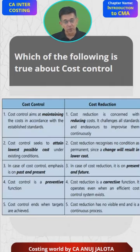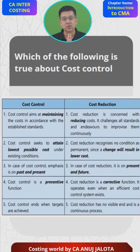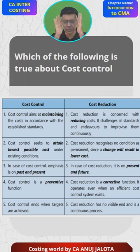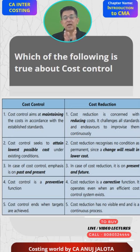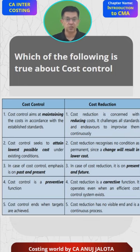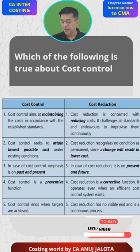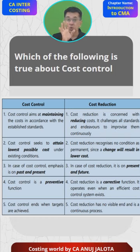Now, one thing you should know about cost control and cost reduction: cost control is maintaining the cost as per the standards. Cost reduction means — we have this calculator made by a company called Casio, following standard costing, cost is as per standards, but they would still like to reduce the cost further — that is cost reduction. Cost control seeks to attain the lowest possible cost under existing conditions, meaning standards are set under existing conditions and we want to achieve that cost.